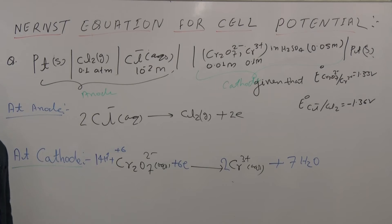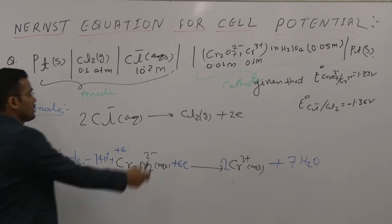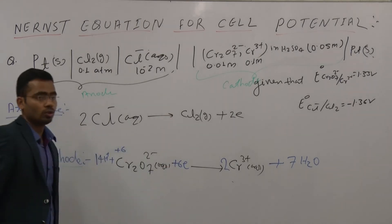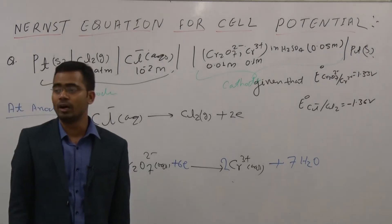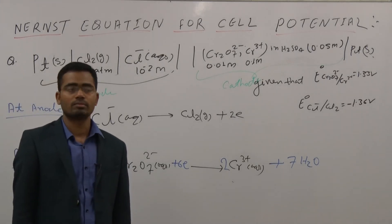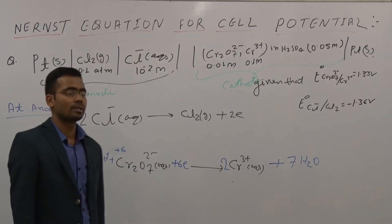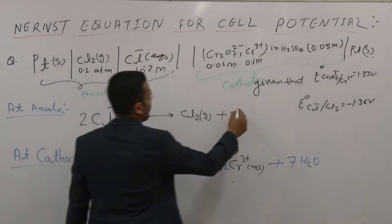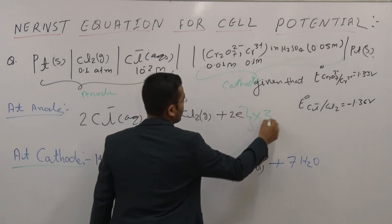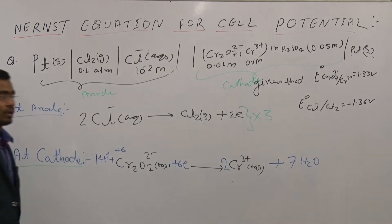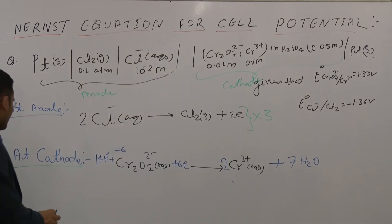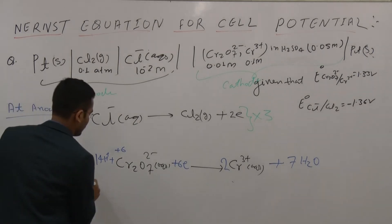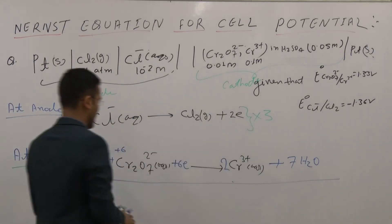Now add both electrode reactions to get the net cell reaction. The cathode half-cell has 6 electrons and the anode half-cell has 2 electrons. The electron count must be the same in both. So multiply the anode expression by 3, making 6 electrons on each side.